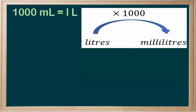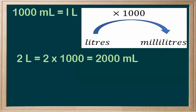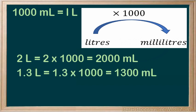Since one liter is equal to a thousand milliliters, multiply by a thousand to change from liters to milliliters. Two liters would be two times one thousand, which is two thousand milliliters. One point three liters would be one point three times a thousand, which is thirteen hundred milliliters.